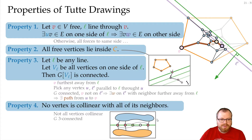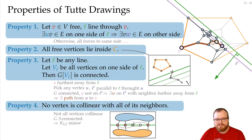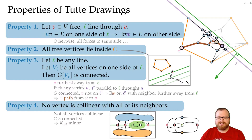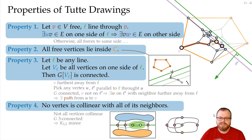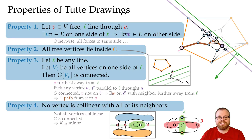From this we can construct a K33 minor: contract the blue part, contract the orange part, and contract all the non-red vertices on the line. This gives a graph where blue, green, and orange are each connected to all three red vertices — a K33 minor. By Kuratowski's theorem, K33 is not planar, and having a K33 minor means the graph is not planar. This is a contradiction, so Property 4 is proved.